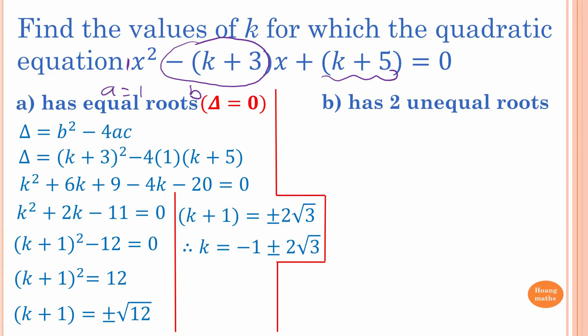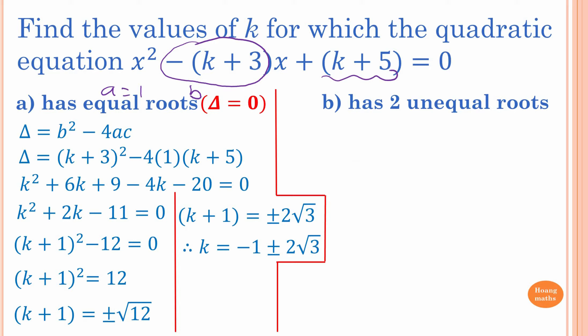Find the value of k for which the quadratic equation has two unequal roots. Two unequal roots means the graph crosses the x-axis twice. Since the coefficient of x² is positive, the parabola opens upward. This means the discriminant must be greater than 0.